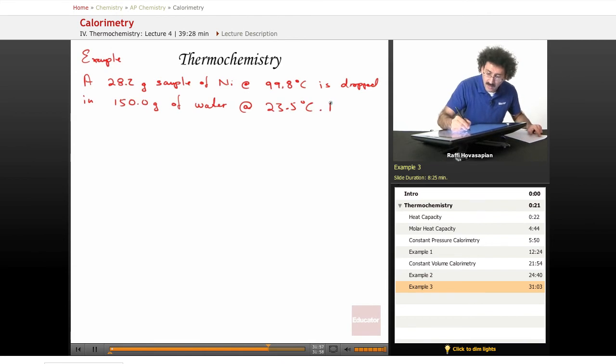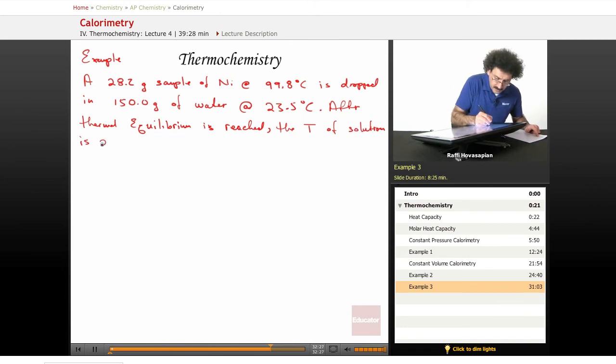After thermal equilibrium is reached, in other words after we allow everything to settle down where now no more heat is being transferred between the metal and the water, after thermal equilibrium is reached, the temp of the solution is 25 degrees Celsius. What is C? What is the heat capacity for nickel?